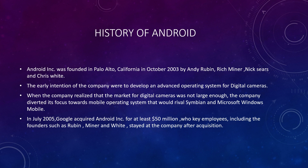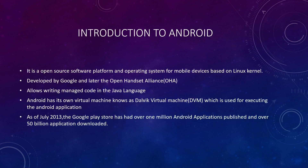In July 2005, Google acquired Android for at least around 50 million dollars. Key employees, including the founders such as Rubin, Miner, and White, stayed on after the acquisition. Now coming to the introduction of Android.